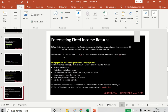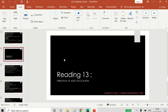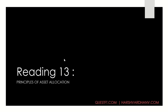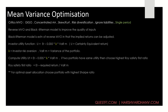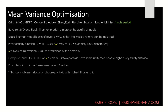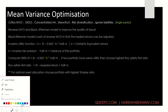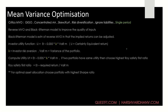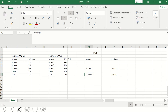Let's start with asset allocation. I'm going to cover some basic things in asset allocation — specifically Reading 13, because Readings 12 and 14 are self-explanatory and intuitive. In Reading 13, we have some interesting concepts. Mean-variance optimization is something we've been hearing about a lot in the CFA curriculum. So what is MVO? Let's understand it in action.